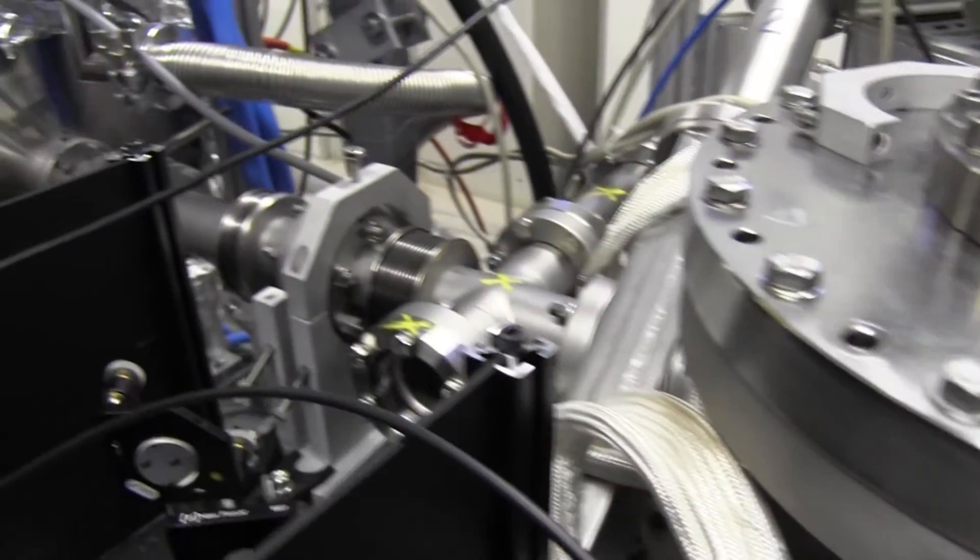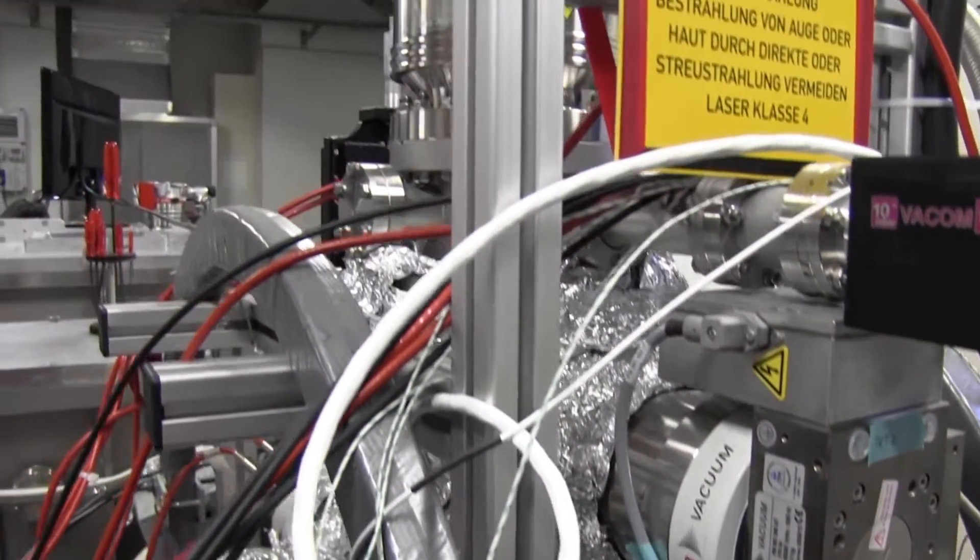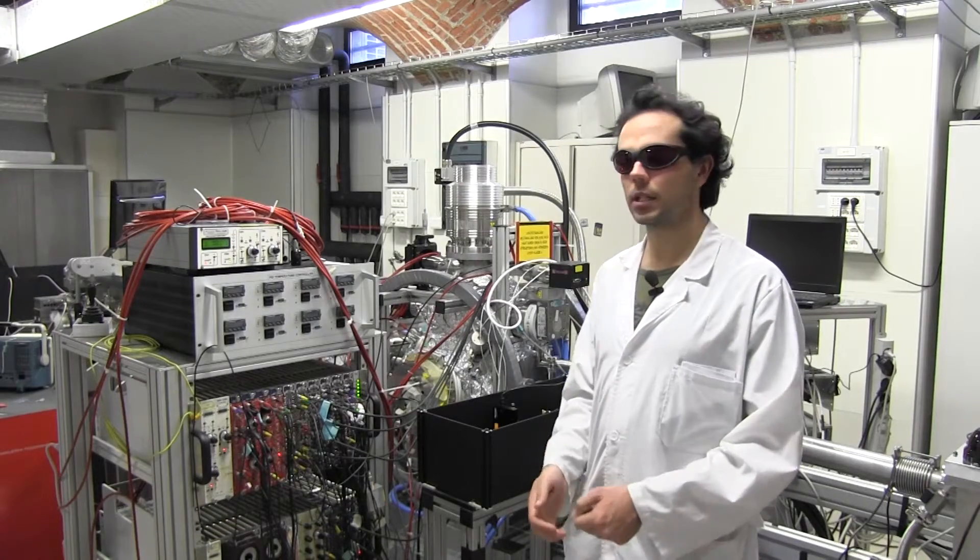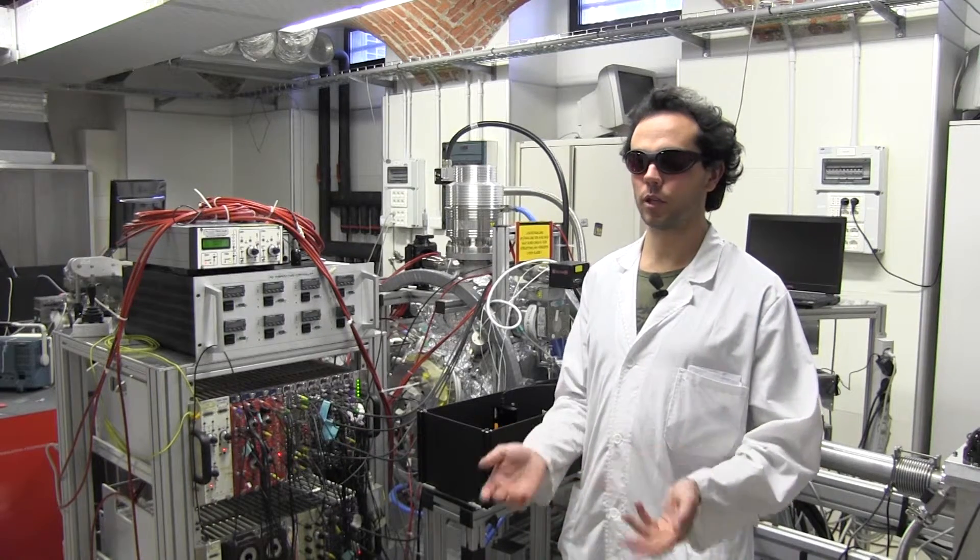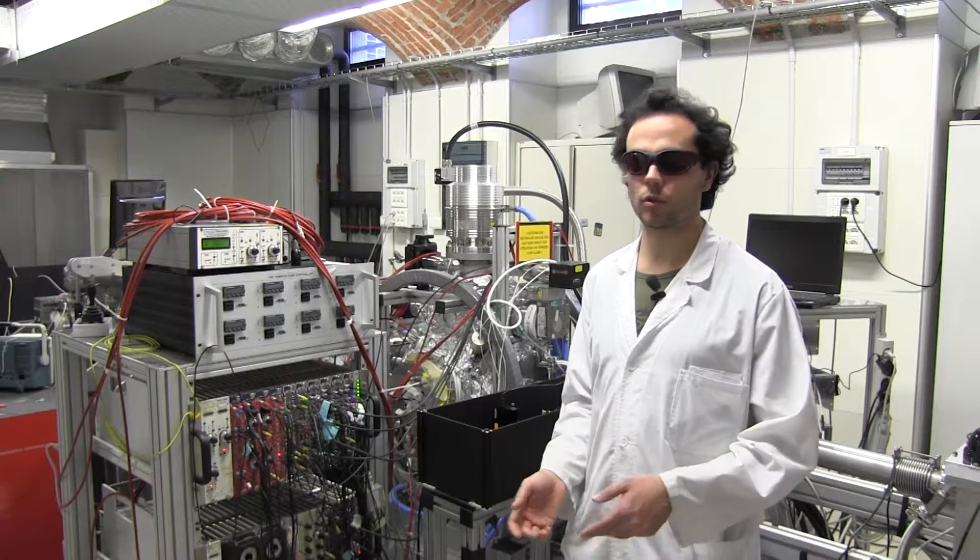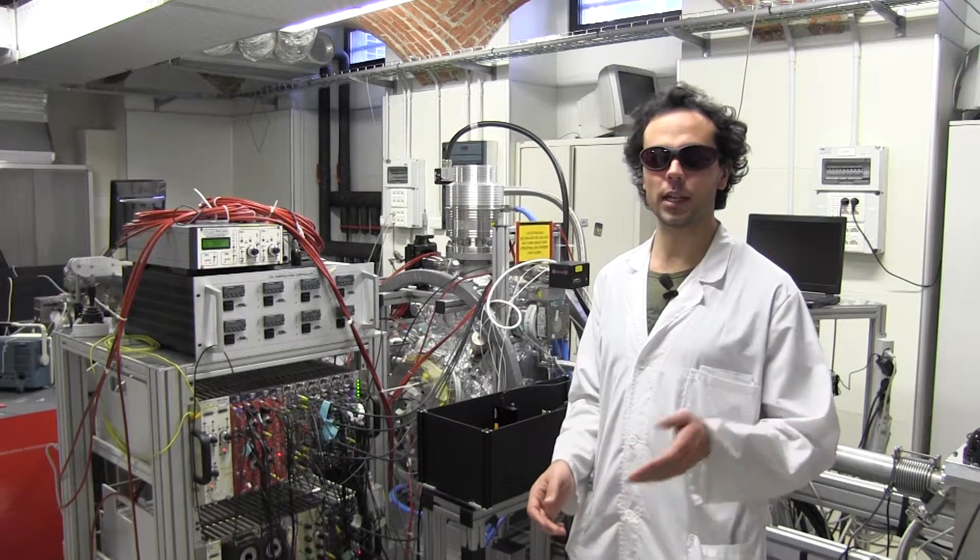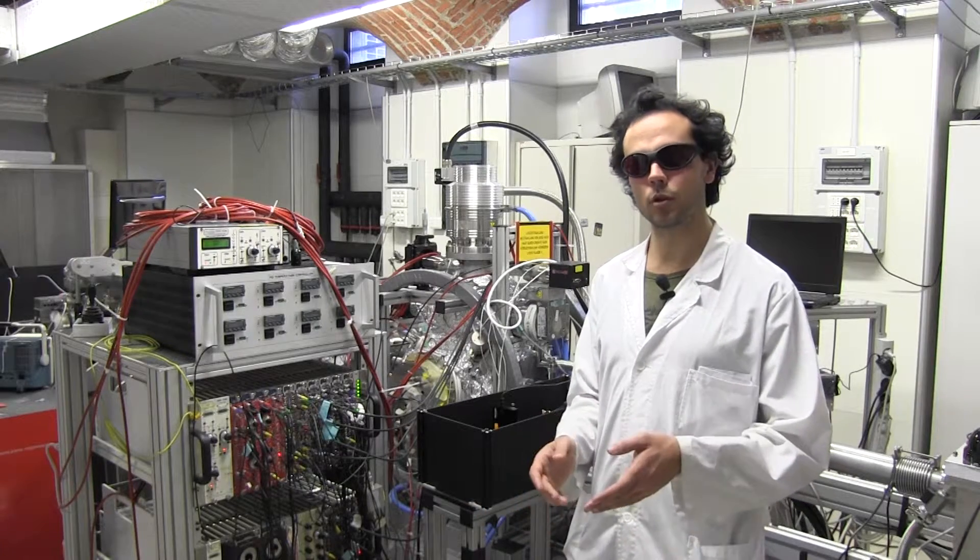This is the reaction microscope. It's a charged particle spectrometer. It allows to measure the full 3D momentum of ions and electrons in coincidence. This means that, for a given photoionization or photodissociation event, it measured the 3D momentum of the electron and the ion, which were belonging to the same atom or molecule.